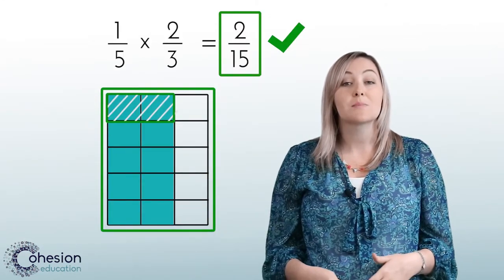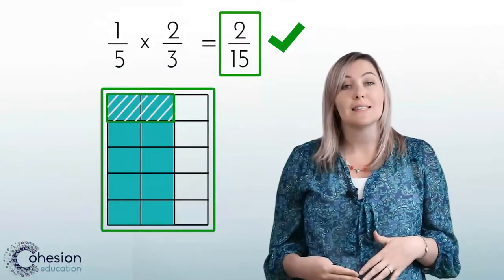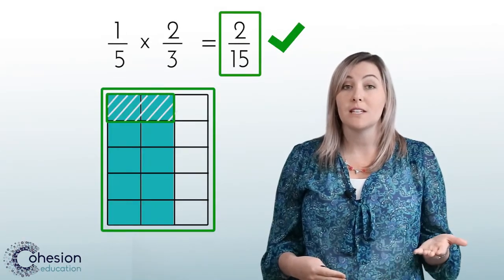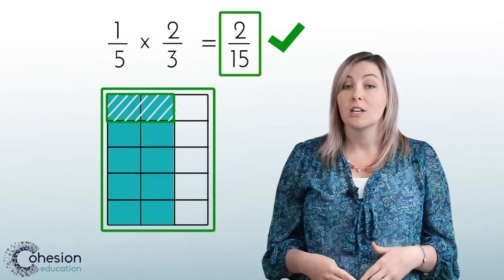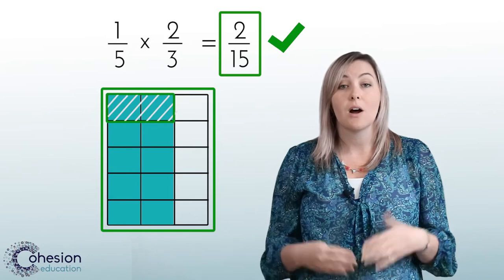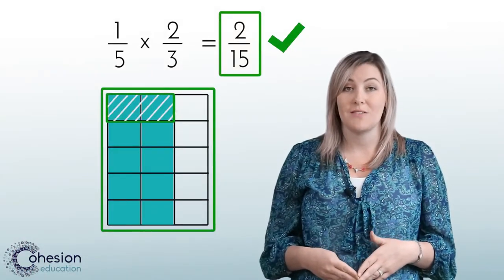To address this error, explain to students that the entire model equals a whole. In this case, our model is made up of fifteen whole pieces. The denominator of any fraction should always represent the number of pieces our whole is cut into. Therefore, our denominator should be fifteen.